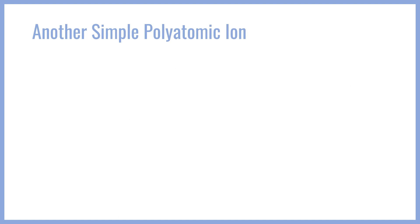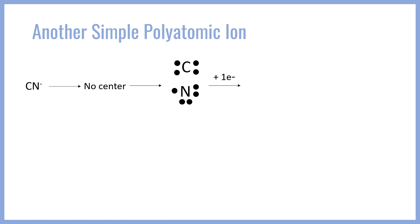Let's go ahead and take a look at another simple polyatomic ion, the cyanide ion, CN-. In this case, there is no central atom, so we could really choose either atom to take on the negative charge. Carbon is going to have four electrons and nitrogen is going to have five. We're going to need to add one electron, and I want to add it to the more electronegative atom. The more electronegative atom is going to pick up that electron.